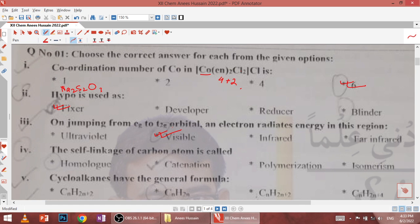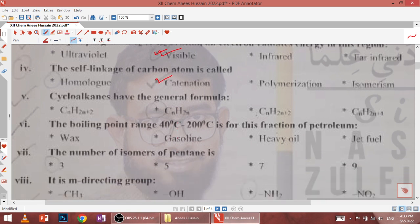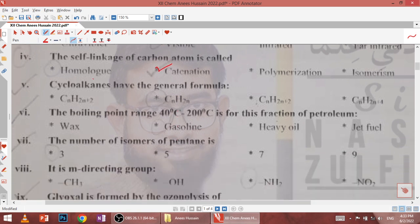Fourth, the self linkage of carbon atom is called catenation. Fifth, cycloalkanes have the general formula, what? Cycloalkanes general formula is like alkenes.